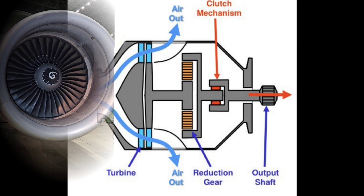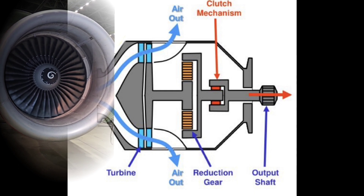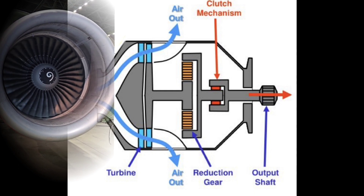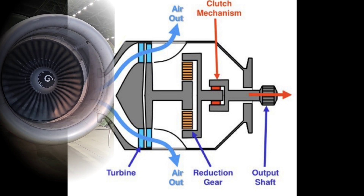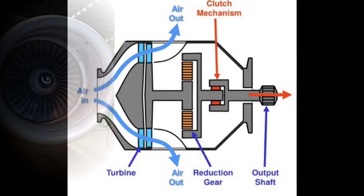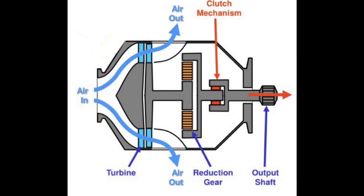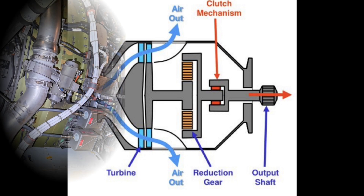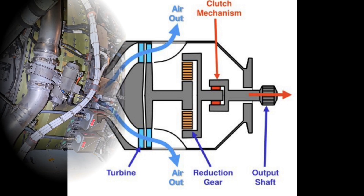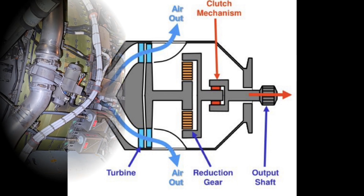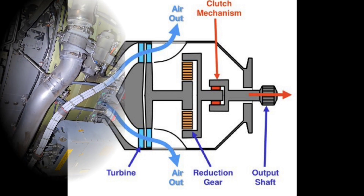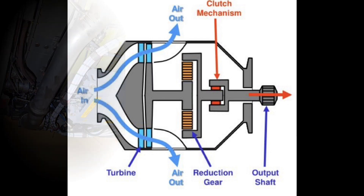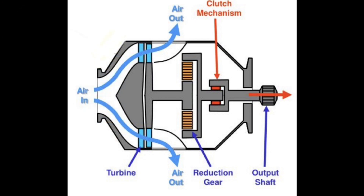The starter itself has enough power to rotate N2 to about 20%. During startup, the starter supplies the engine up to 50% of N2 and then the starter valve closes the air supply. Since the starter is no longer supplied, the turbine will slow down, which will disengage the clutch.